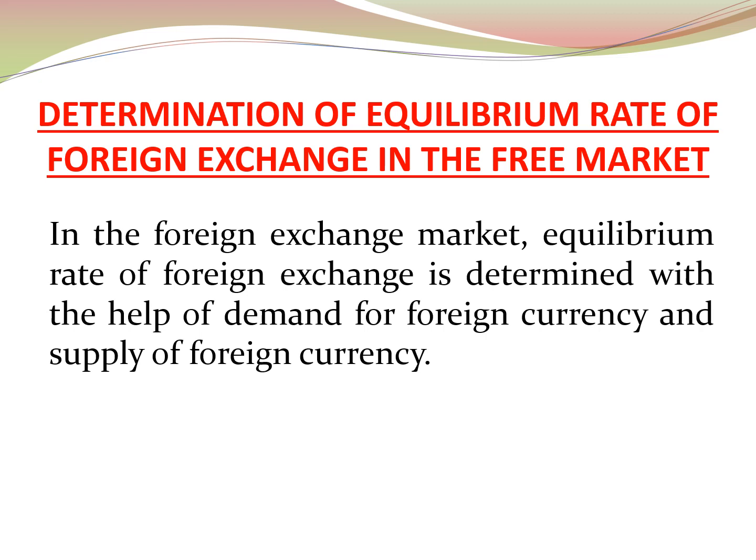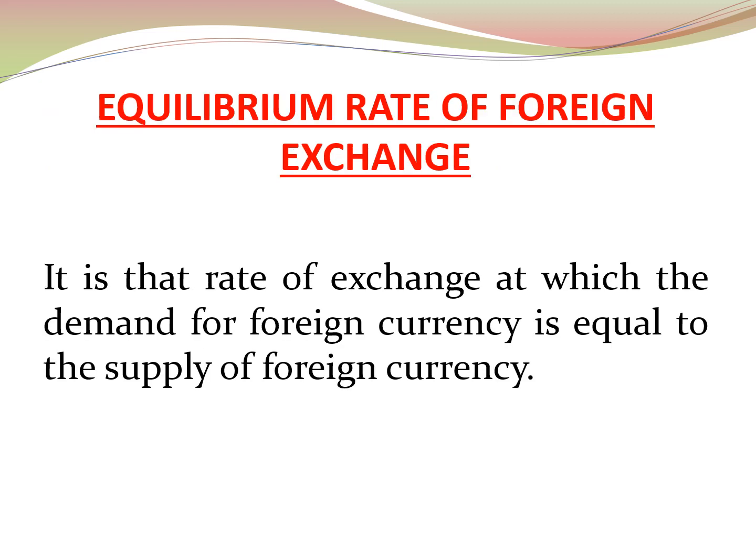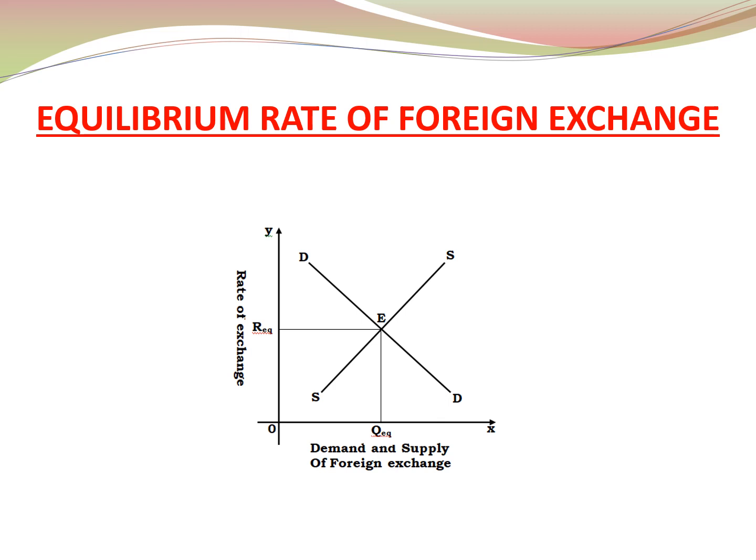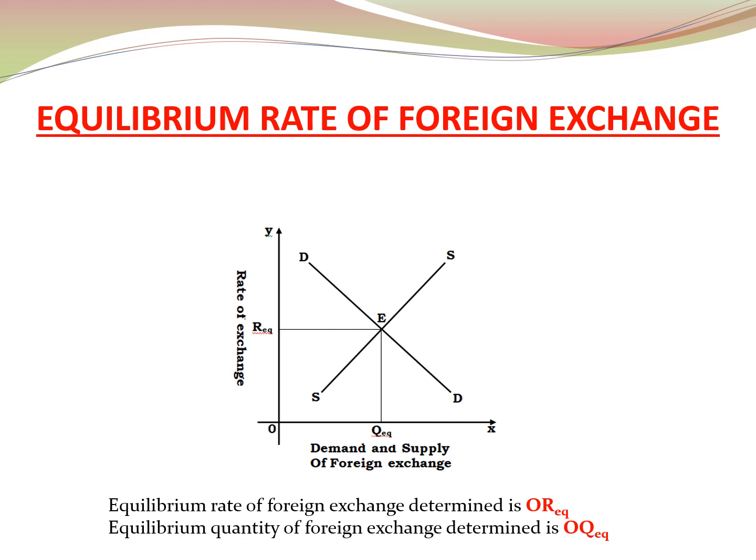Now let us see the determination of the equilibrium rate of foreign exchange in the free market. In the foreign exchange market, the equilibrium rate is determined with the help of demand and supply of foreign currency. The equilibrium rate is that rate at which the demand for foreign currency equals the supply. From the diagram, DD is the demand curve and SS is the supply curve. DD and SS intersect at point E, determining the equilibrium rate OREq and equilibrium quantity OQEq. The demand and supply forces together determine the equilibrium rate.